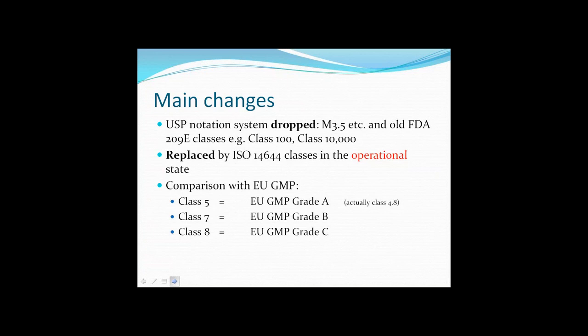Here we have a difference with both EU GMP and World Health Organization GMP on one side, and the USP and the FDA guide on the other side. This is because the World Health Organization and EU GMP use an alphabetic notation, where clean rooms are listed as grade A, grade B, grade C, and grade D. So there is a translation issue. Both WHO and EU GMP refer to ISO 14644 for classification of clean rooms but stick to the alphabetical listing for assessing clean rooms in operation.